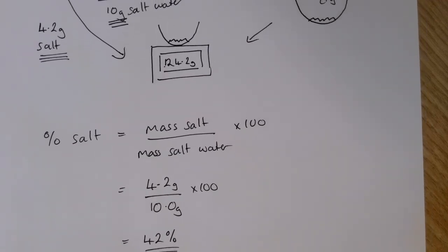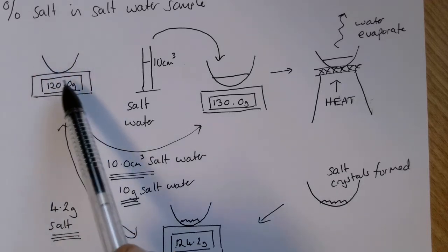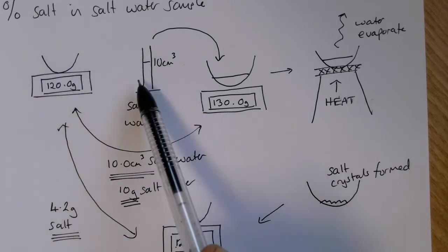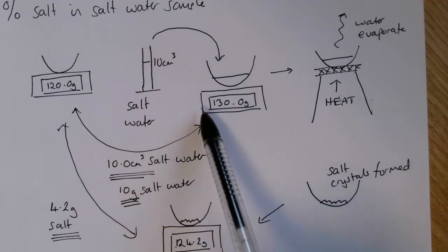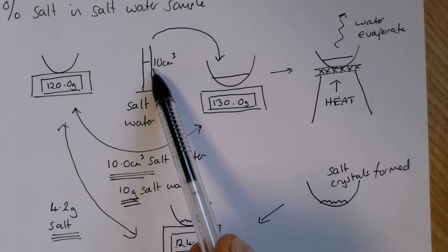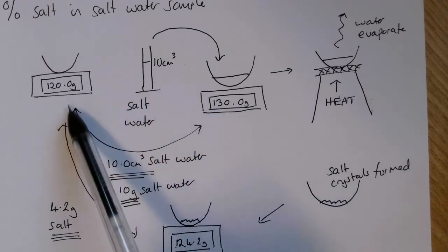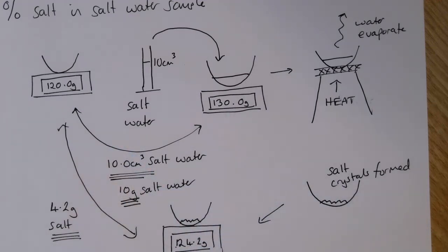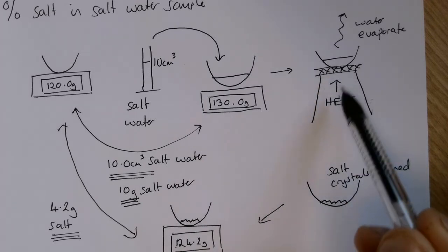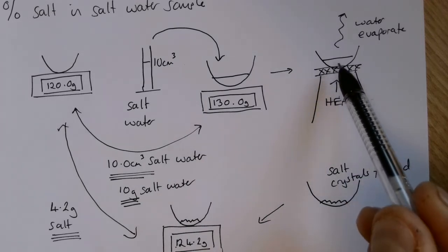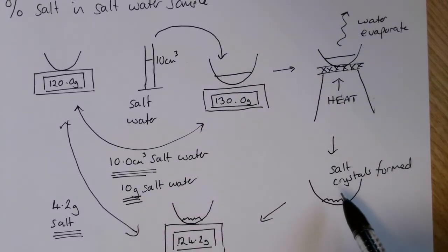Just as a quick review of the practical that we've done: we find the mass of an empty crucible, we add 10 cubic centimeters of our salt water sample to it and re-weigh it to check that is indeed 10 grams. The difference between the full crucible and the empty crucible tells us the mass of the salt water. We then heat the water sample using a Bunsen burner on a tripod and gauze. We will see the water evaporate and then see that salt crystals have formed.